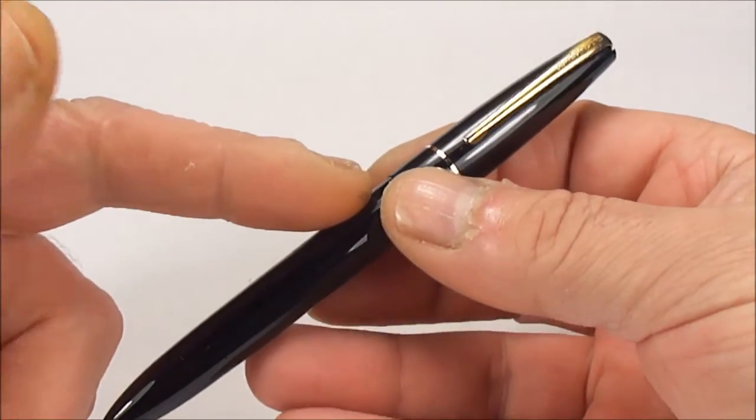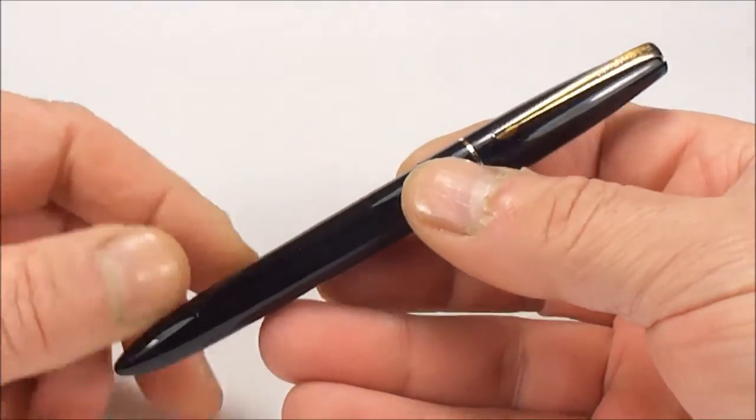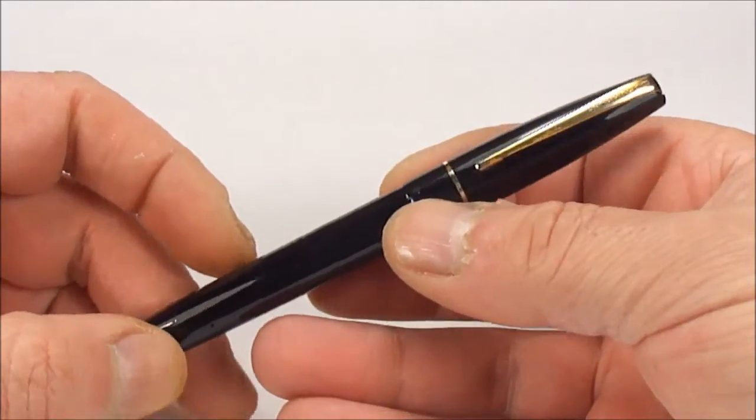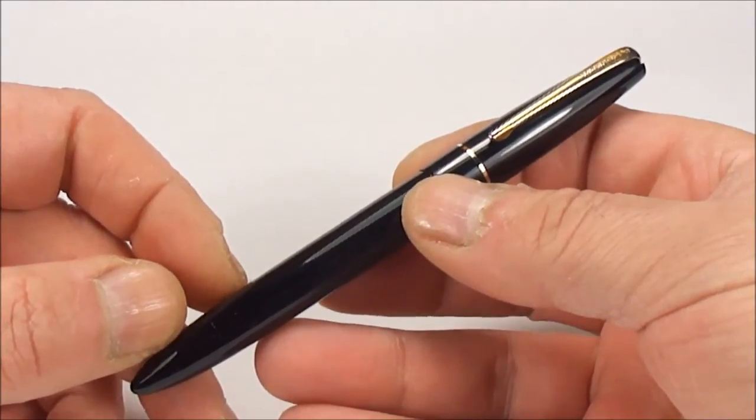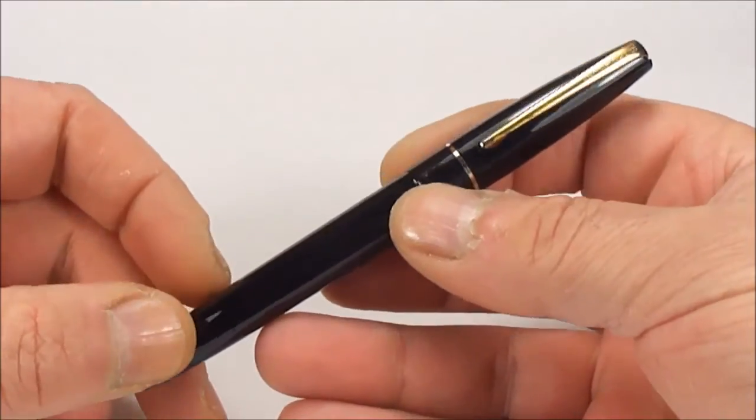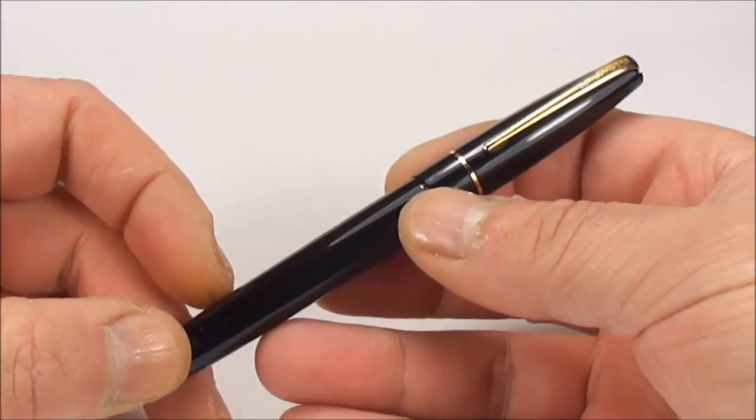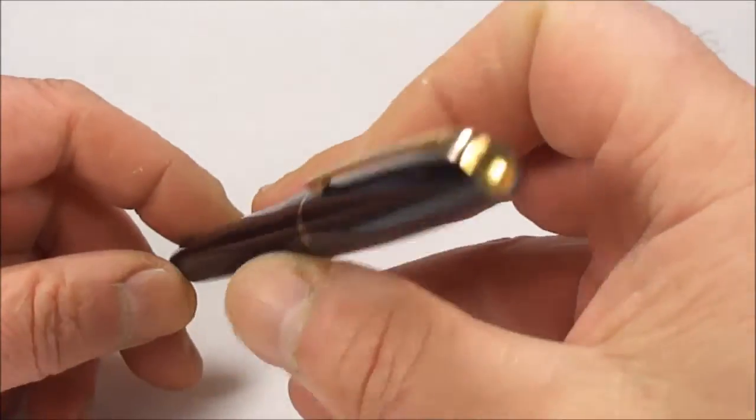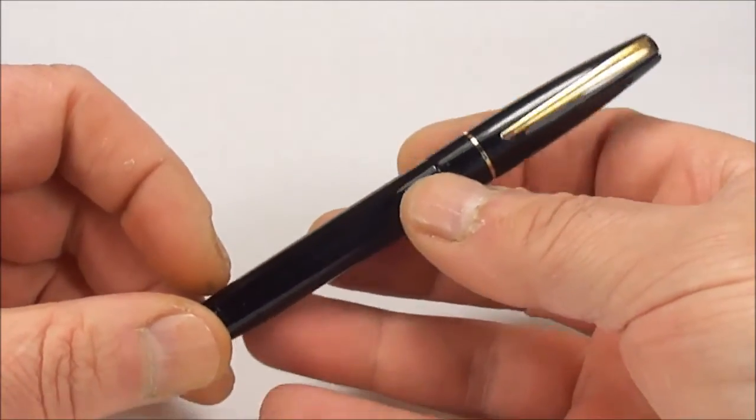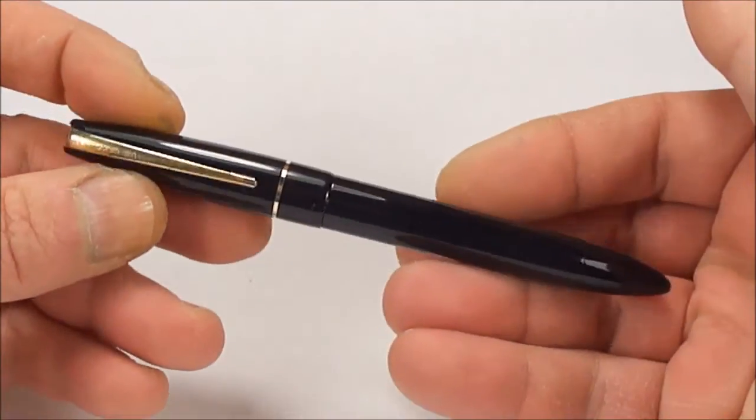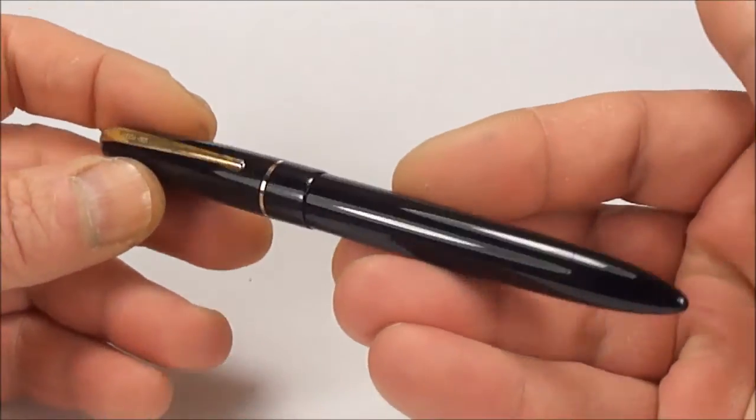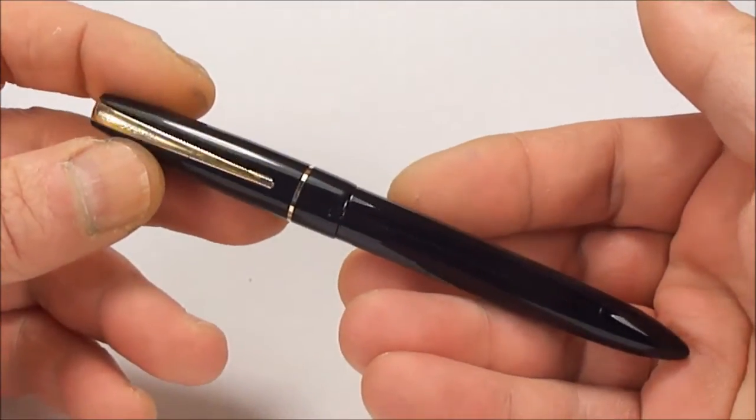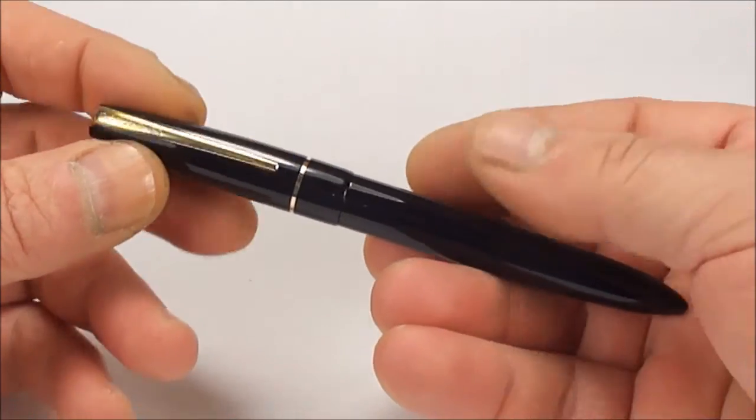The Blackbird I would say was a middle tier fountain pen from Mabie Todd. We all know the Swan Mabie Todd range was the top of the range, then they brought out these particular pens, the Blackbirds, and they also had what they termed as the Swallow fountain pens, which was a lower tier.